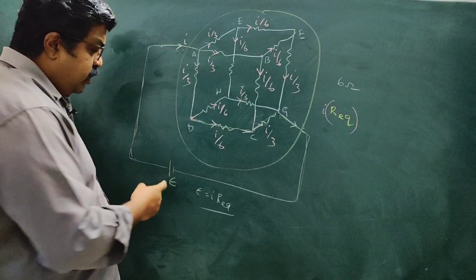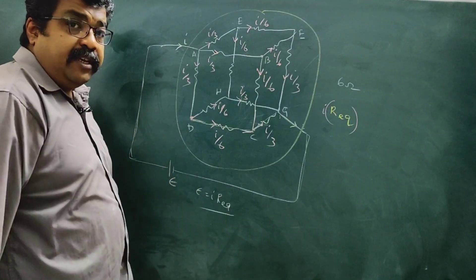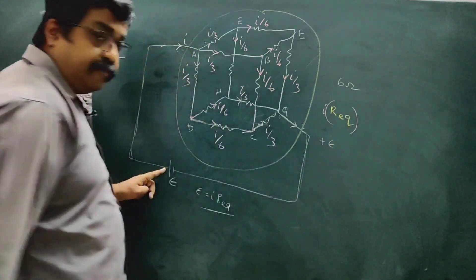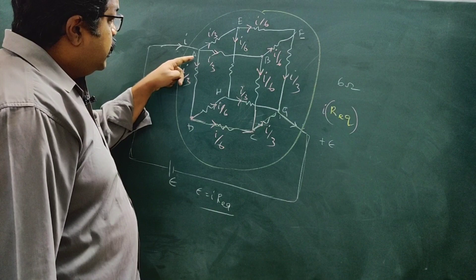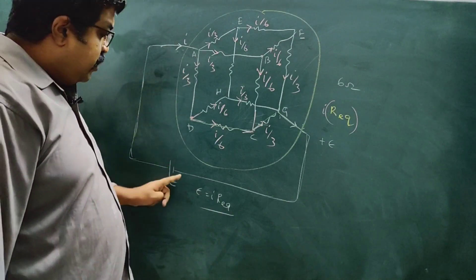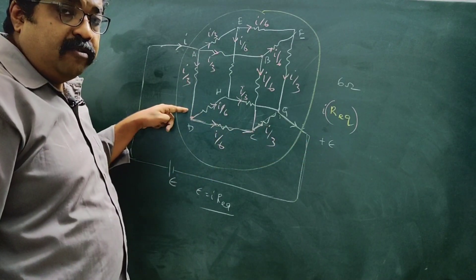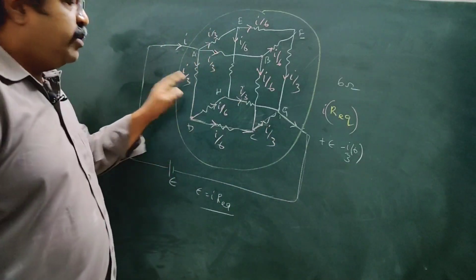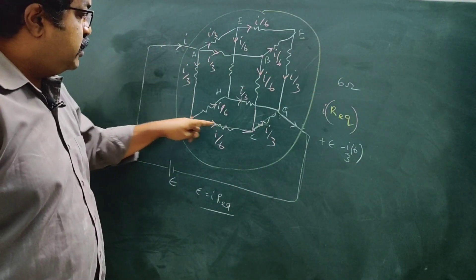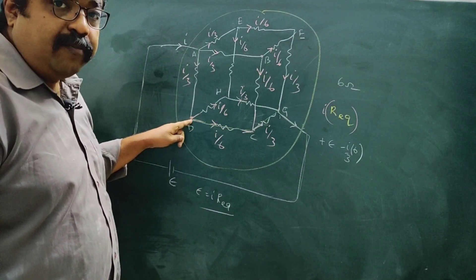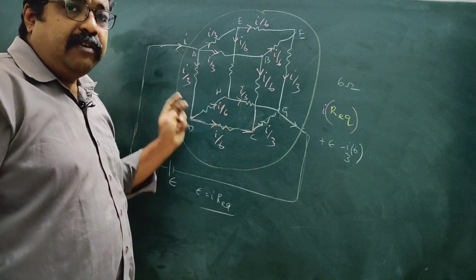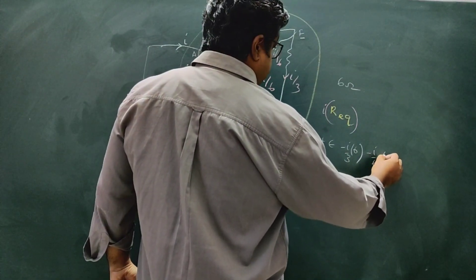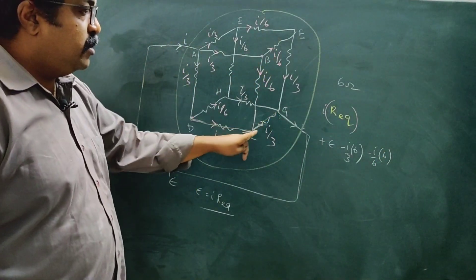Going from low potential to high potential means gain — positive sign. It is negative to positive, so plus E. Current flows from high potential to low potential — that is a loss, so minus sign. So we have minus I/3 into 6. Current through this branch is I/6, resistance is 6 ohm. High to low is a loss, so minus I/6 into 6 as well.